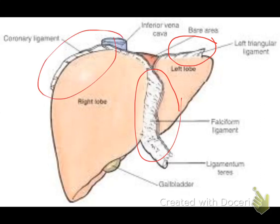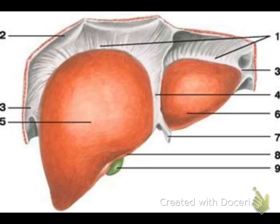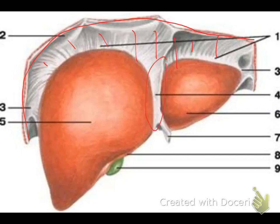This graph shows the peritoneal reflections attaching the liver to the diaphragm. This ligament attaches the liver to the diaphragm, and this ligament attaches the liver to the diaphragm. This ligament attaches the liver to the posterior abdominal wall, or to the posterior aspect of the anterior abdominal wall. Another graph shows the diaphragm and these ligaments of the liver attaching it to the diaphragm.